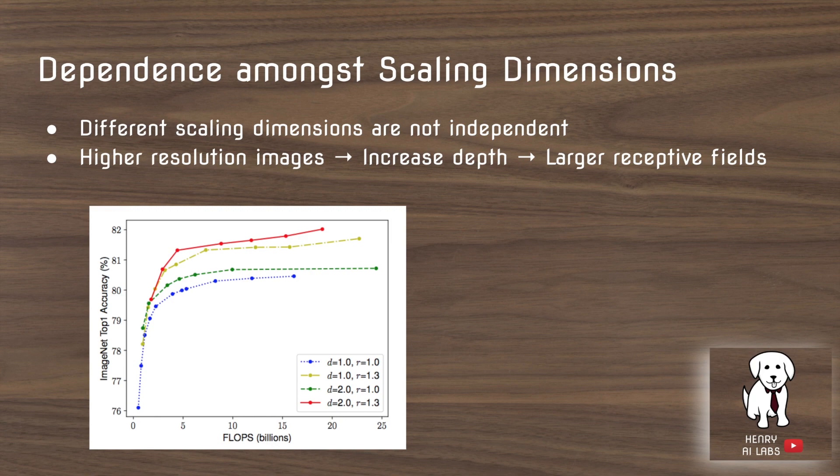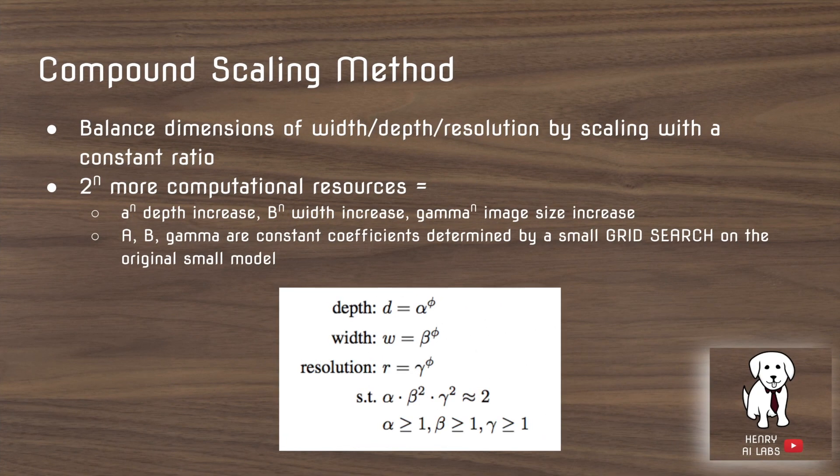The dependence among scaling dimensions shows that scaling the dimensions isn't independent. For example, if you increase the depth, you'll find good results by increasing the input resolution as well. The compound scaling method is the key idea in EfficientNet — the idea is to balance the upsampling of width, depth, and resolution by scaling them with a constant ratio.